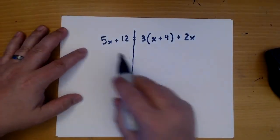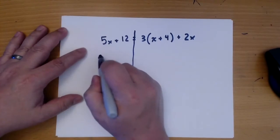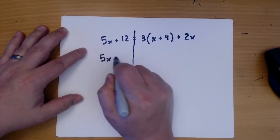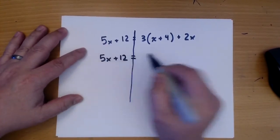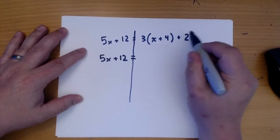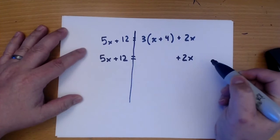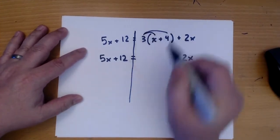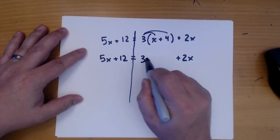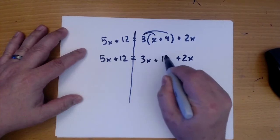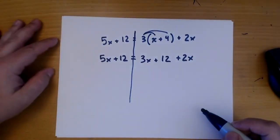So there's nothing to do here. We just copy it down. And there's nothing to do here, so we copy it down. This we distribute.